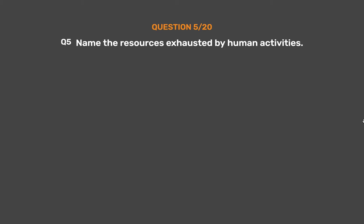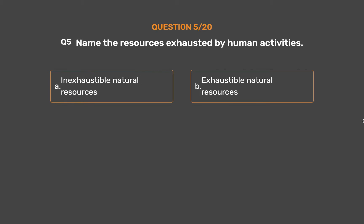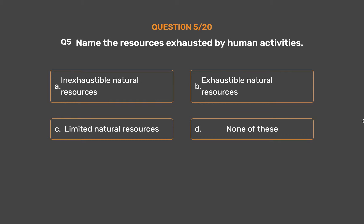Question number 5: Name the resources exhausted by human activities. Option A: Inexhaustible natural resources. Option B: Exhaustible natural resources. Option C: Limited natural resources. Option D: None of these.